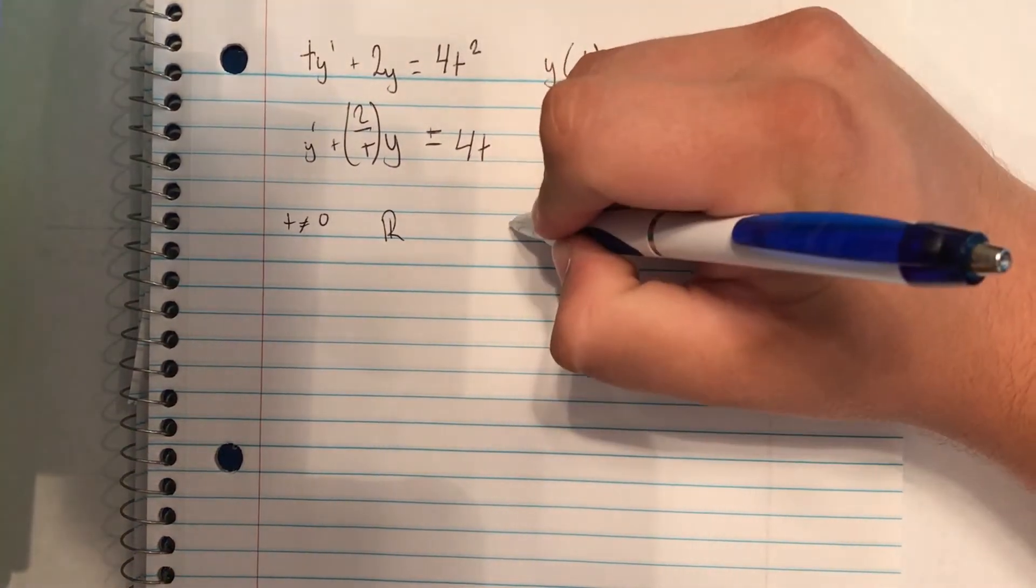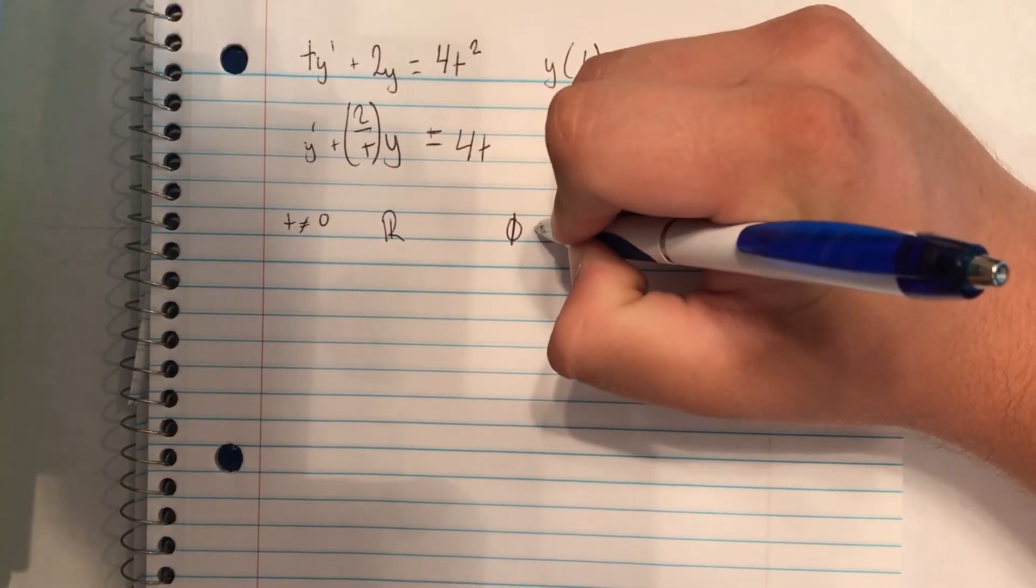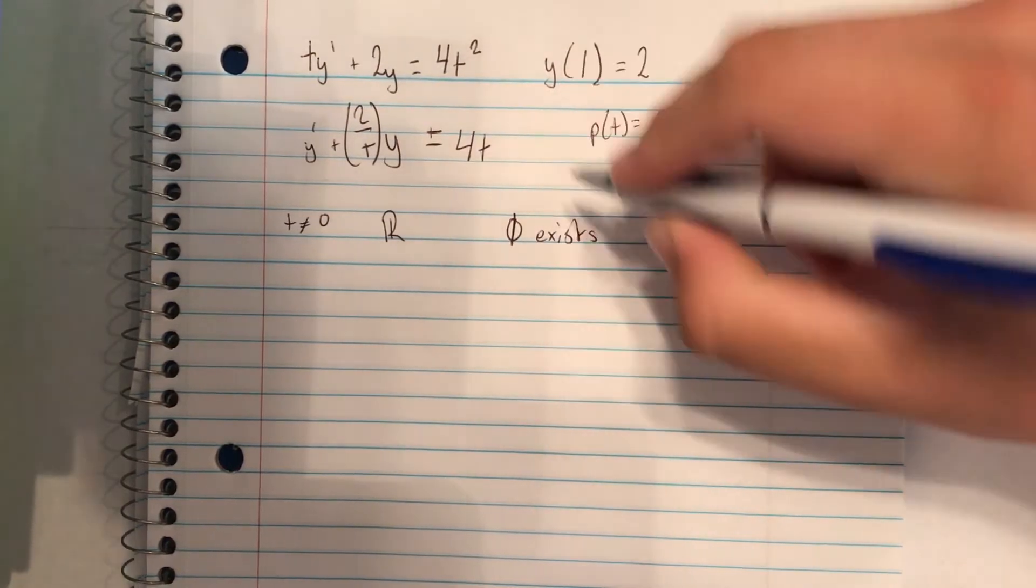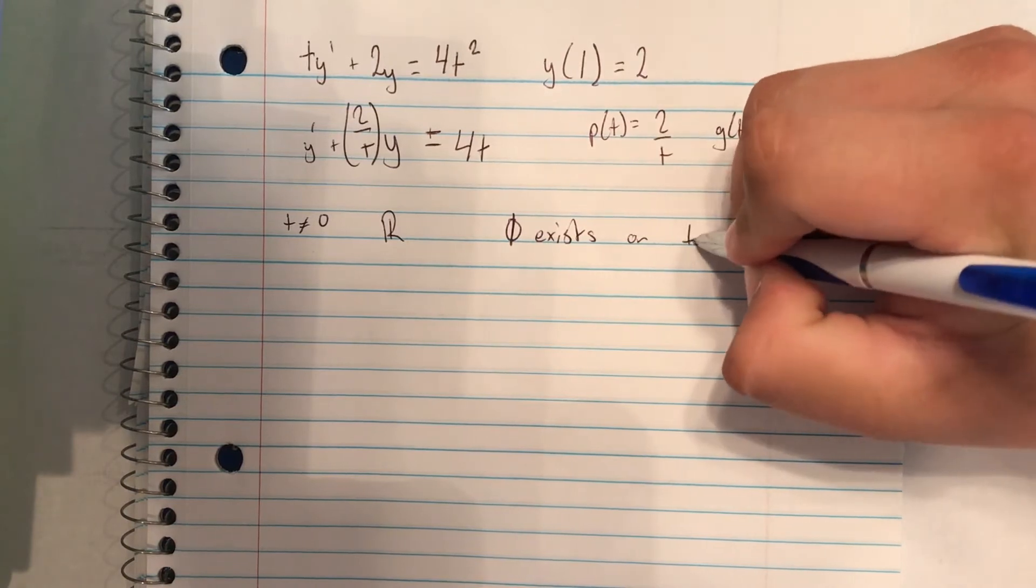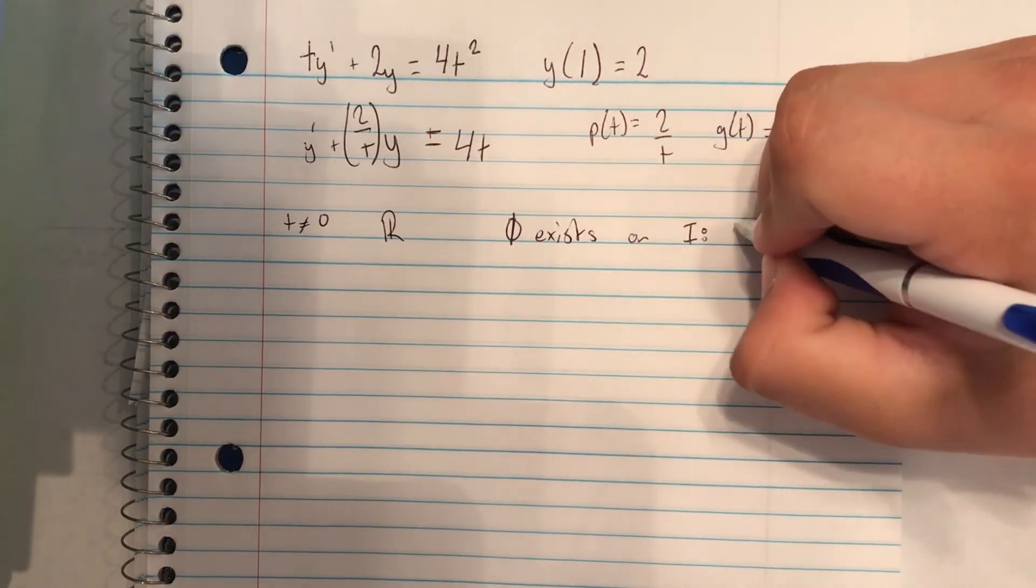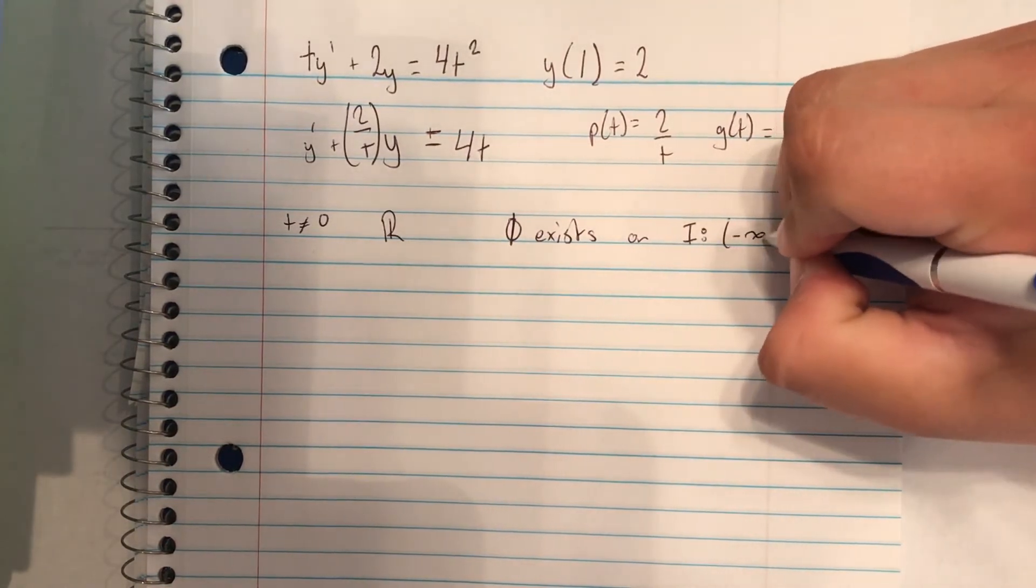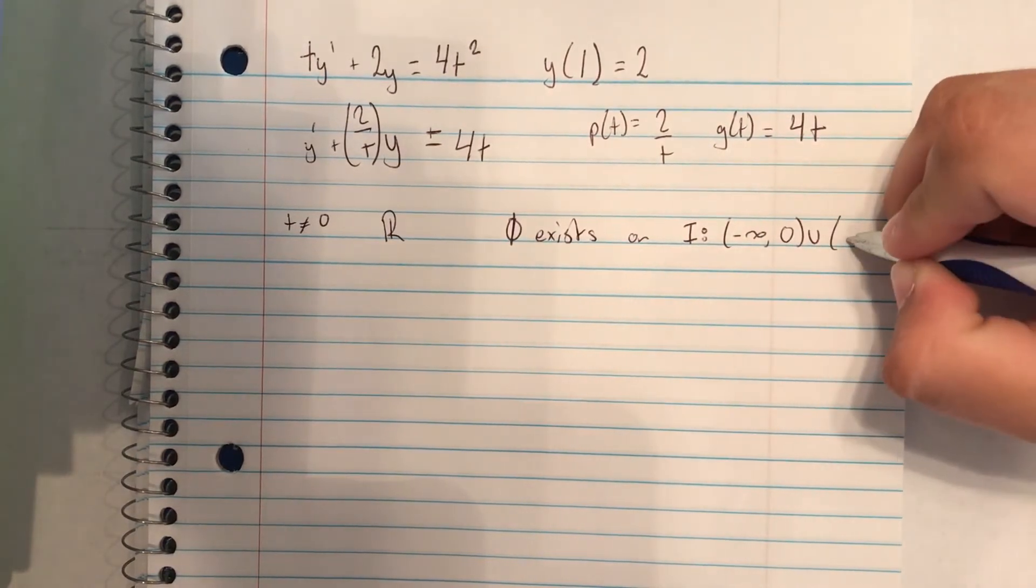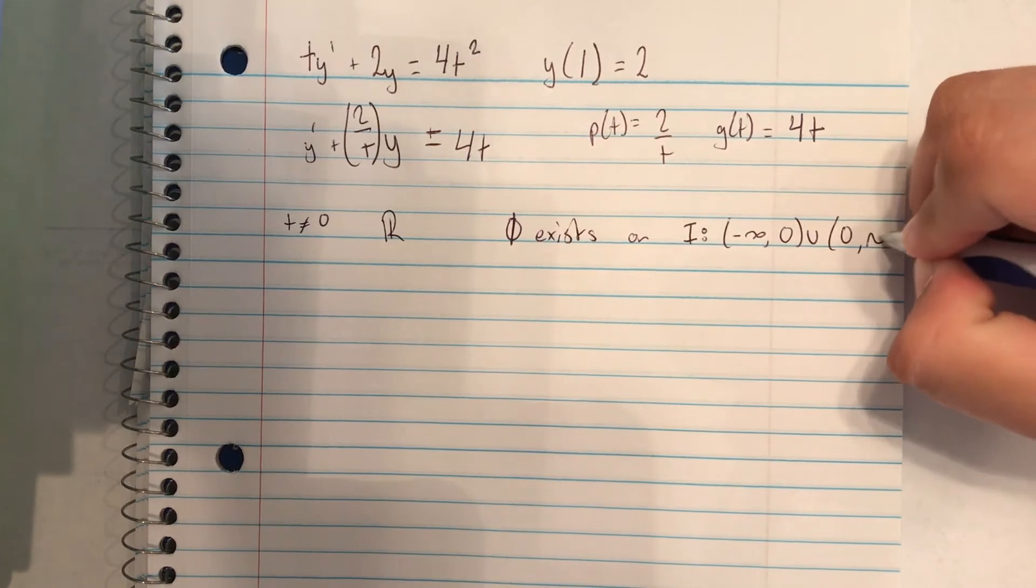So we know that some solution exists on... I'm just going to write this out instead of using the notation... exists on some interval negative infinity to 0 union 0 to infinity.